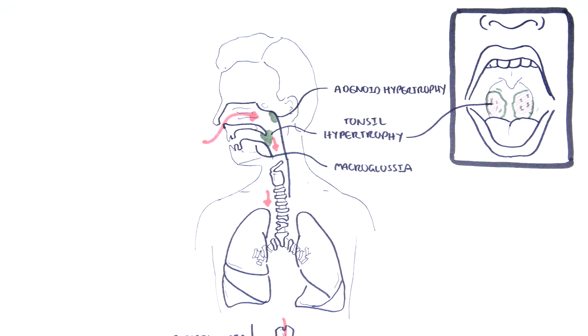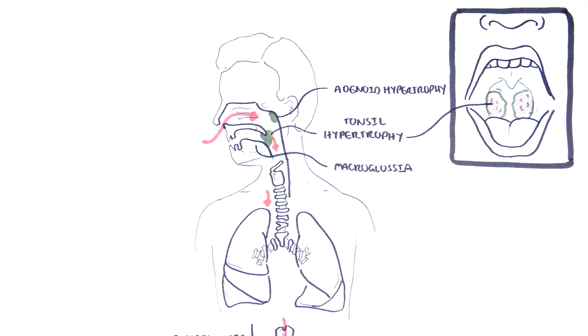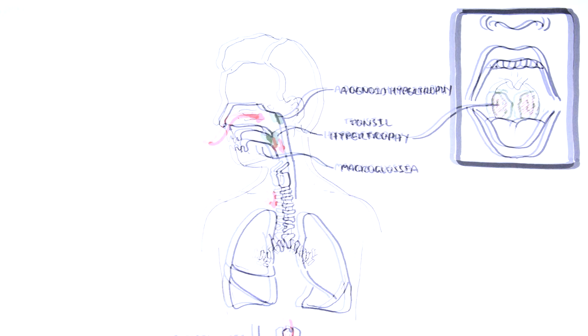Macroglossia, which means an enlarged tongue, causes partial or complete obstruction of the airway depending on the cause. Causes of macroglossia to remember include allergic reactions causing angioedema, amyloidosis, Ludwig's angina, and many congenital causes.